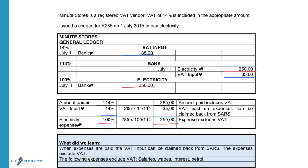So when we pay expenses, the VAT input can be claimed back from SARS. Therefore, the expense will always exclude the VAT because it will not form part of the expense.